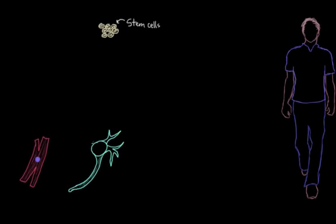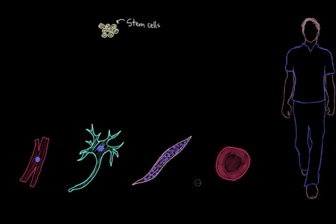You've probably heard of stem cells by now. And you probably know that every cell in our body, whether it's a muscle cell or a nerve cell or a skin cell or a red blood cell or any other type of cell really, they all came from a common group of stem cells during development.